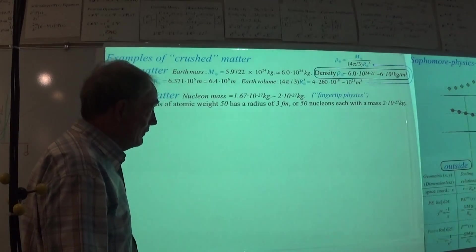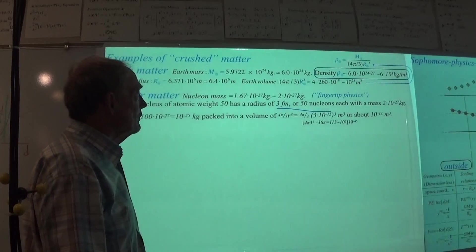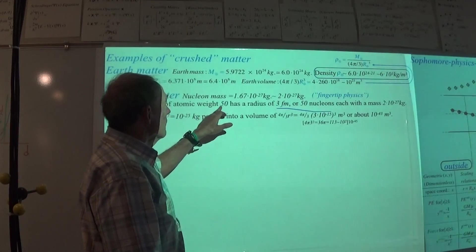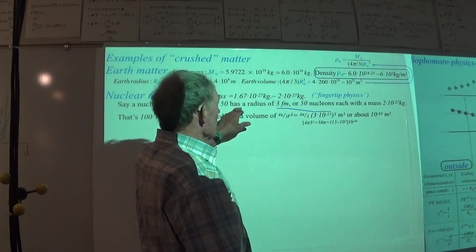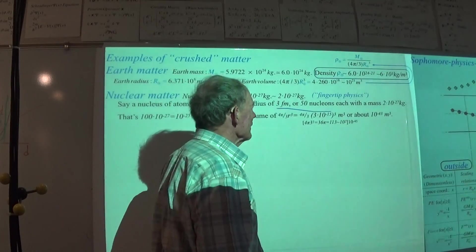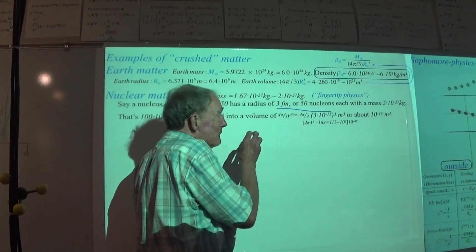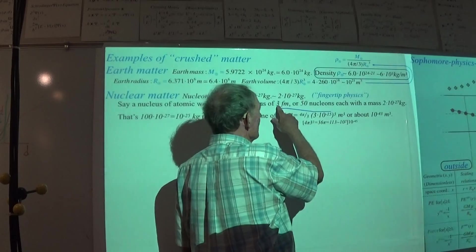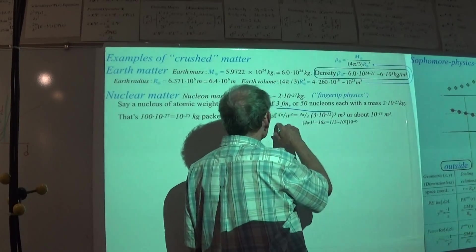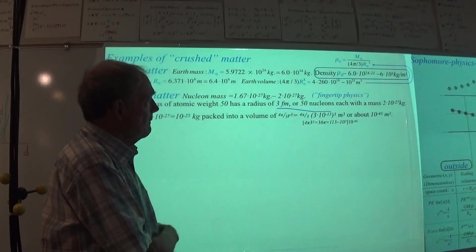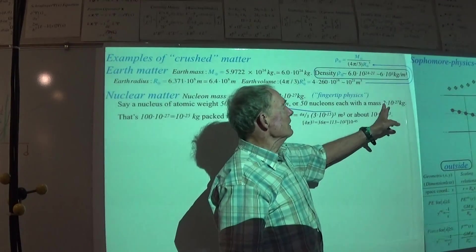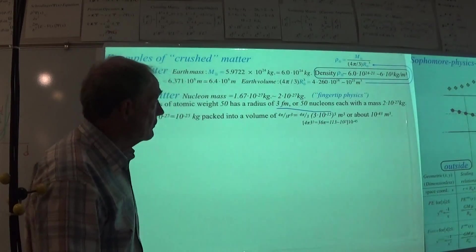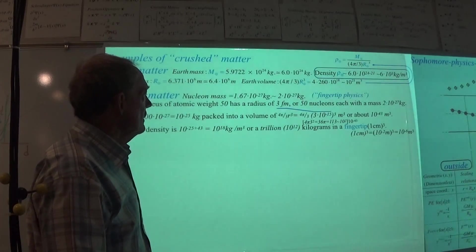Now, what I like to do is a little fingertip physics. I will skim through fairly quickly here, but we say a nucleus of an atom, atomic weight 50, radius of 3 femtometers, so I just picked that sort of out of the air to make a middle of the periodic chart example. And what I'm doing here, if I've got 3 femtometers right there, and I'm talking about packing the mass where each nucleon, each proton neutron, roughly 2 times 10 to the minus 27 kilograms, I pack those guys in there.